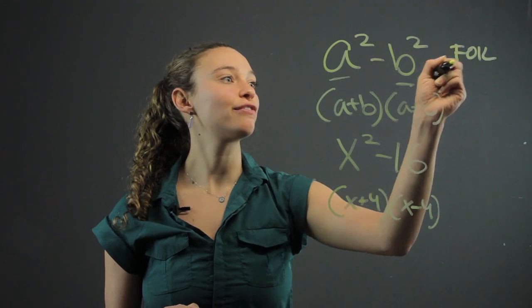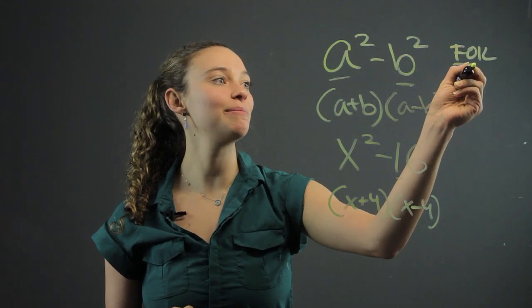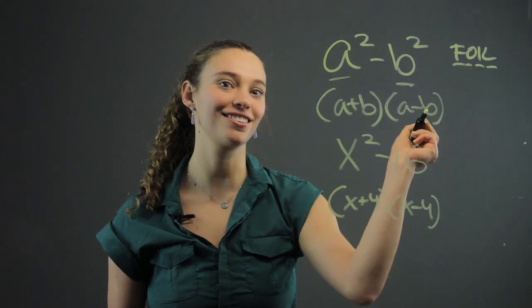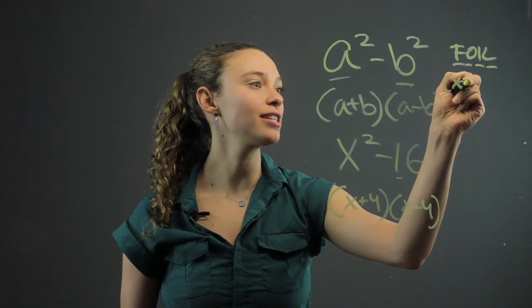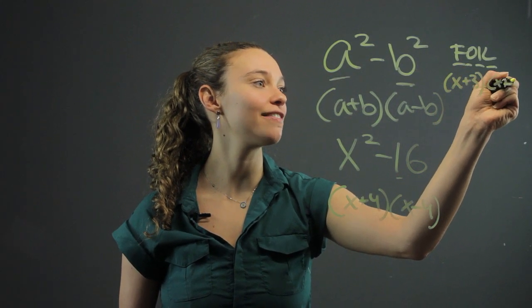which means the front term, the outside term, the inside term, and the last term. FOIL. So this might look like x plus 3 times x plus 5.